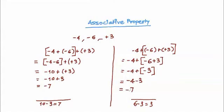So now if you can see, that on both sides the answers are equal — here it is also minus seven, and here also minus seven. So even if we change the order of the operation, we see that the answer is not changing. So we can say that integers are associative under addition, or addition in integers is associative.